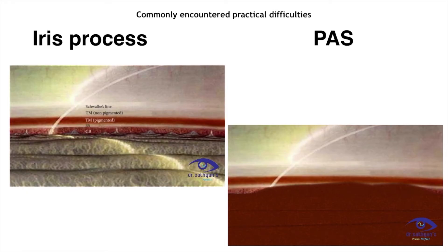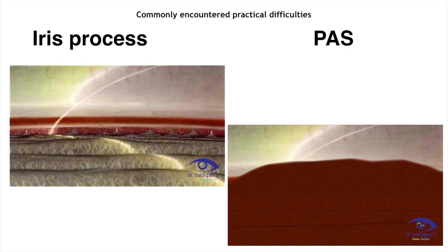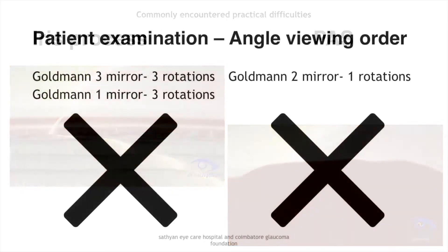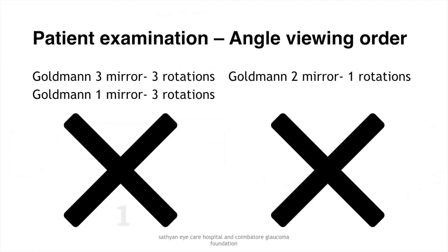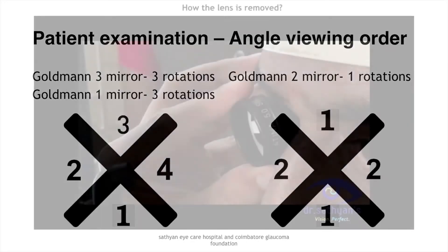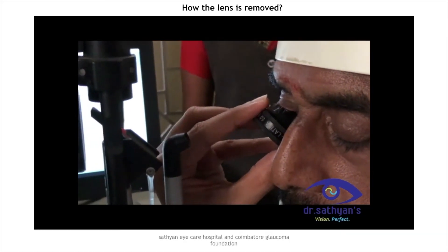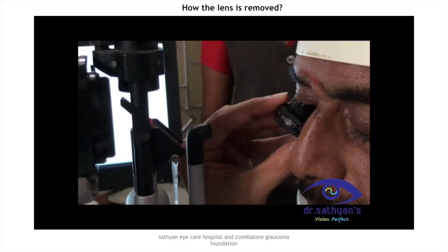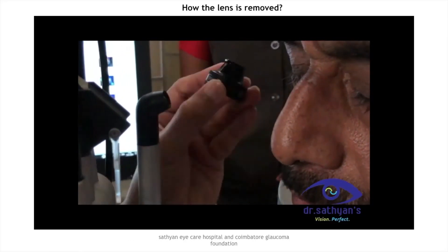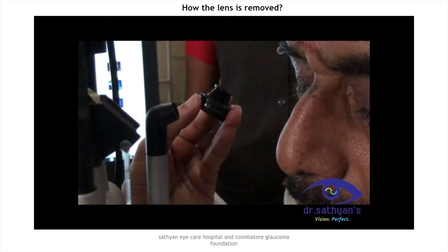PAS is pathological and can be seen at any level, extending up to the Schwalbe's line. PAS is broader, denser, and adheres to the angle structures, causing obstruction to aqueous drainage. With the Goleman 3-mirror and single mirror, three rotations are needed to visualize all four quadrants, whereas in the 2-mirror, only a single rotation is needed. The lens is removed after asking the patient to close their eyes, so that the vacuum generated is reduced, facilitating painless lens removal.